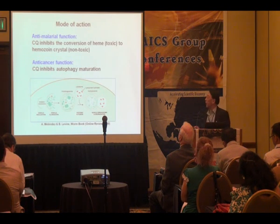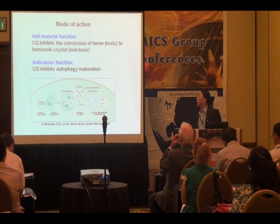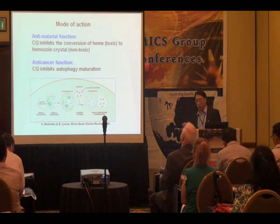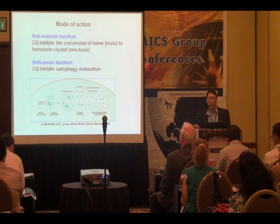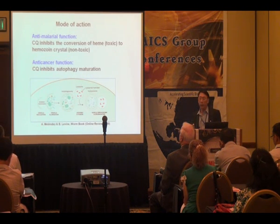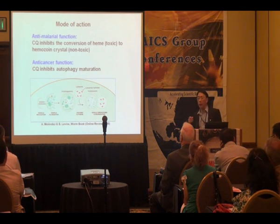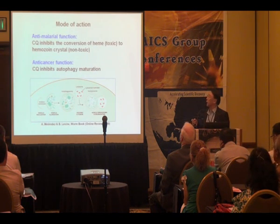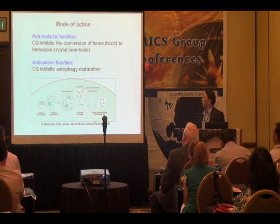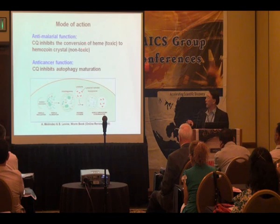In terms of how this works in the anti-malarial function: chloroquine inhibits the conversion of heme. Heme is the byproduct of hemoglobin degradation. Malarial parasites use hemoglobin to obtain amino acids in the digestive vacuole. Unfortunately for the parasite, heme is toxic, so they developed a way to overcome this by crystallizing heme into hemozoin. But chloroquine binds to hemozoin and inhibits this crystallization. That's how it treats malaria.